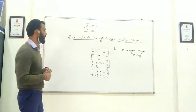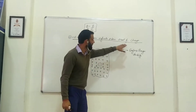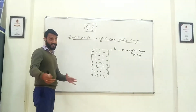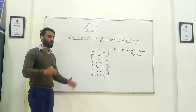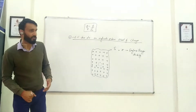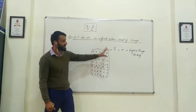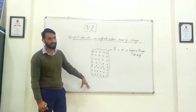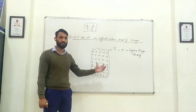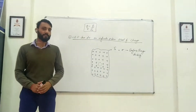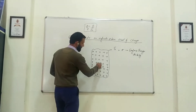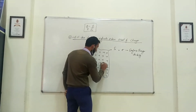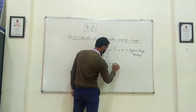For an infinite plane sheet of charge, you need to choose a surface that is symmetrical to this sheet. So what we are doing here is taking the Gaussian surface to be a cylindrical one — we put the cylinder in such a way that it becomes symmetrical to the plane sheet.